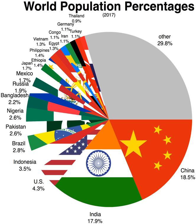Lists of countries by population: Continental, Intercontinental. The United Nations Analytical Report for the 2004 Revision of World Population Prospects — the Analytical Report for the 2006 Revision is not available online. Includes details of methodology and sources used for the population estimates above.